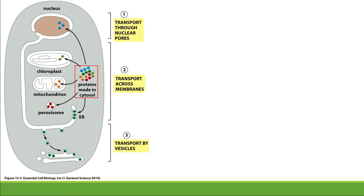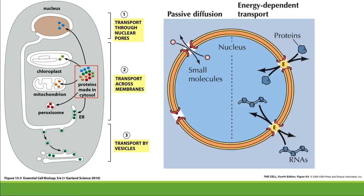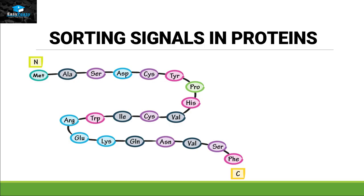If a protein is small in size — approximately 60 kilodaltons — then it can enter inside the organelle by passive diffusion. But if these proteins are larger in size, then they will use an energy-dependent transport system.